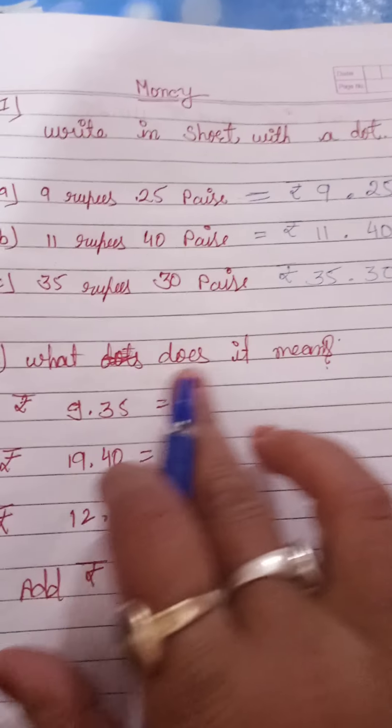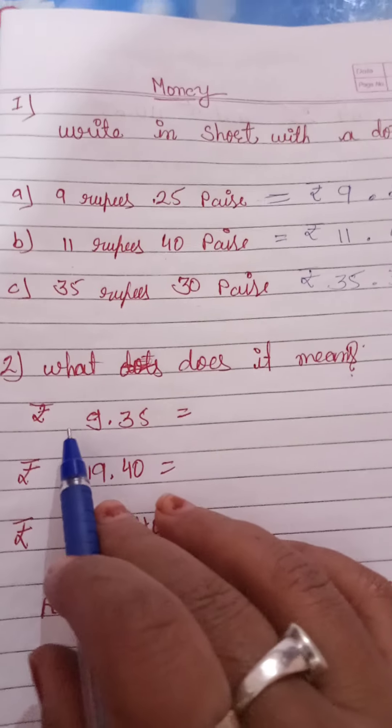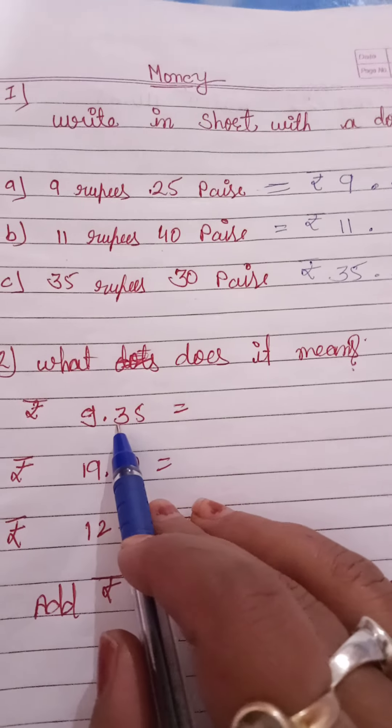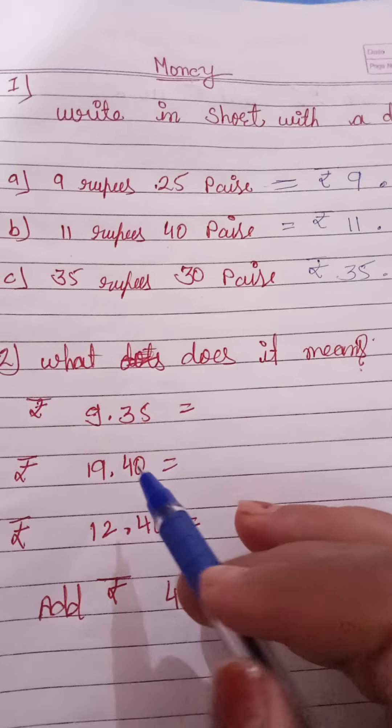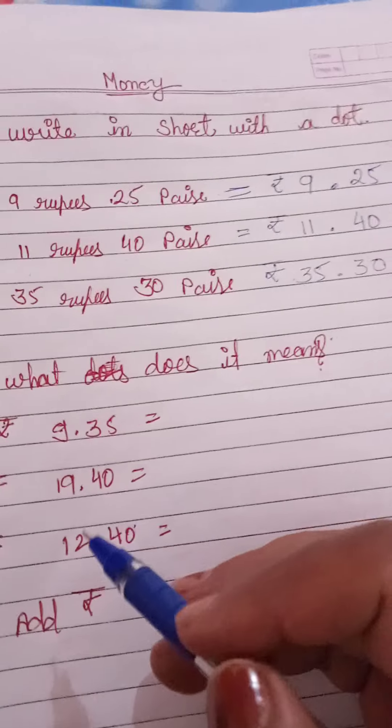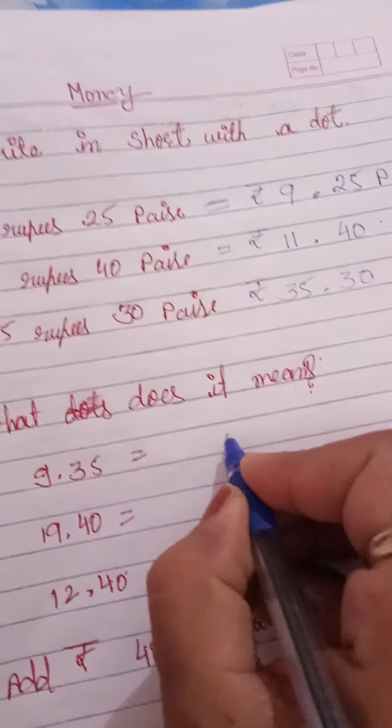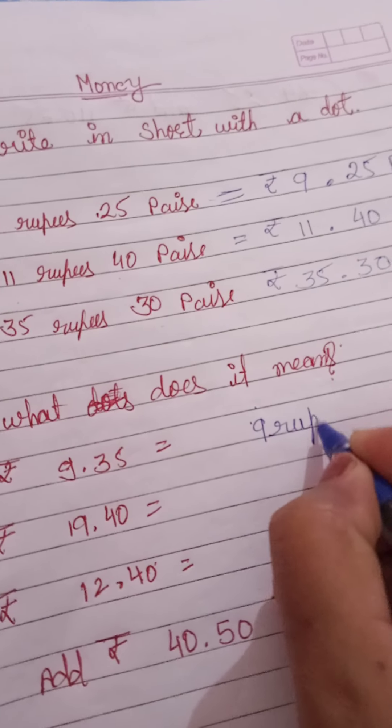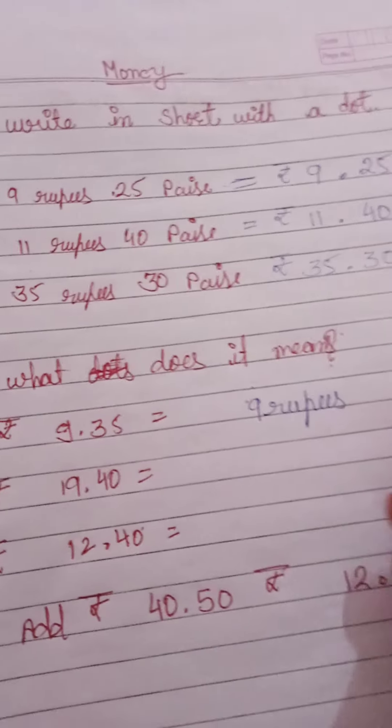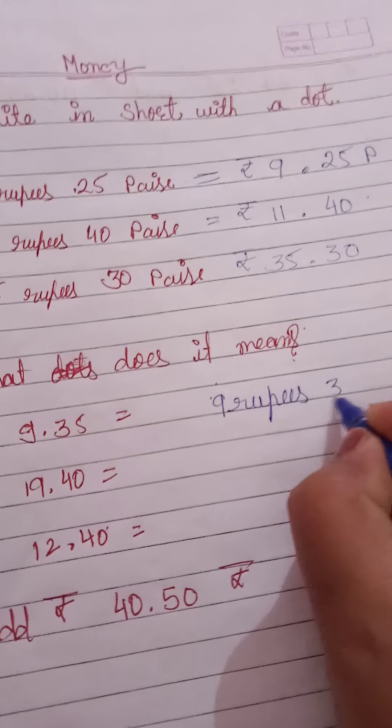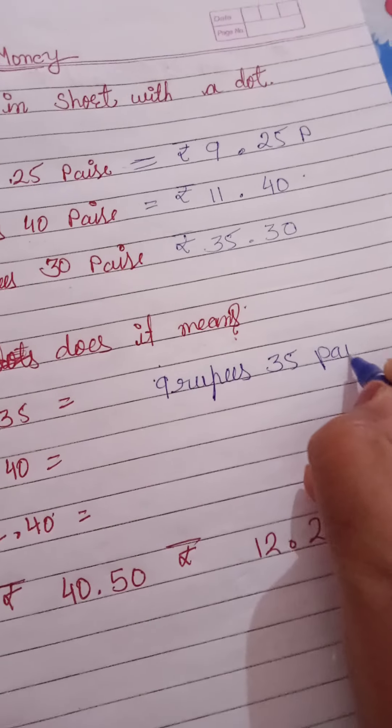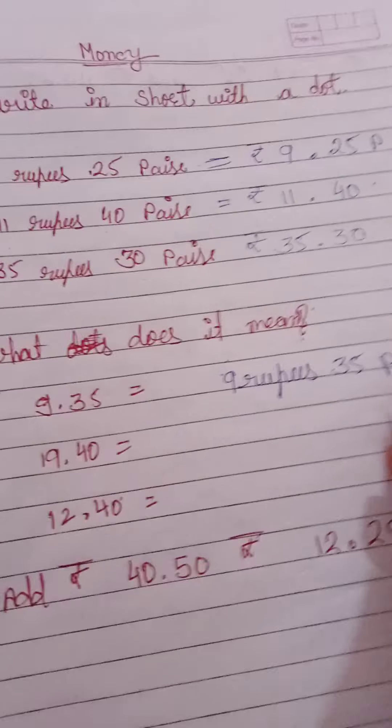Now what does it mean? Ab yahaan par kya likha hai? Rupees 9.35, ye aapko kya bata raha, iska kya matlab hua aapko wo batana. So iska kya hua meaning? 9 rupees and 35 is your paise.